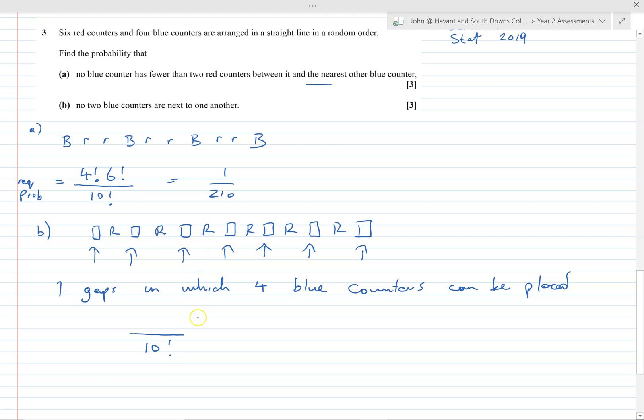Sorry, the red ones themselves, there's six of those. They can be arranged in 6 factorial different ways. So remember, they're all different counters, they just all have red on them. They can be rearranging 6 factorial different ways. But the blue ones can come in, there's seven possible gaps that we need to place four counters, and of course the order is incredibly important here, so 7P4 is the way I would go about it.